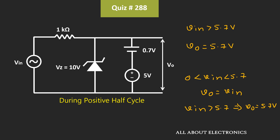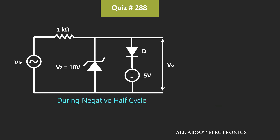Now let's see how the circuit behaves during the negative half cycle. During the negative half cycle, this diode D will remain in the reverse bias condition, because the voltage at the anode will always be less than the cathode. So this diode D will remain in the open circuit condition.